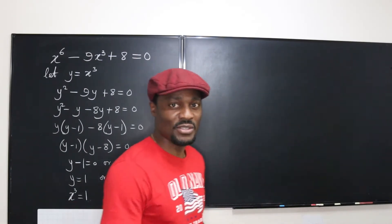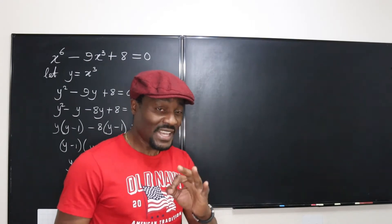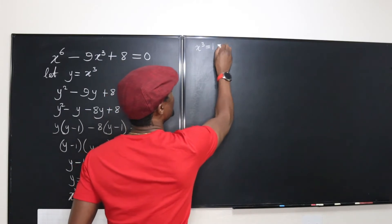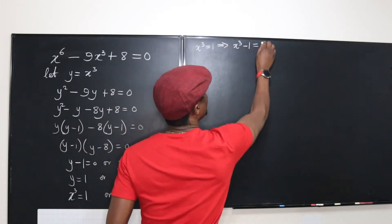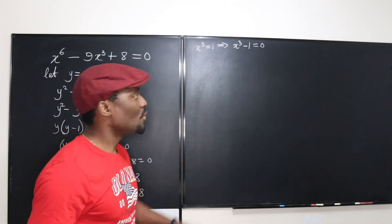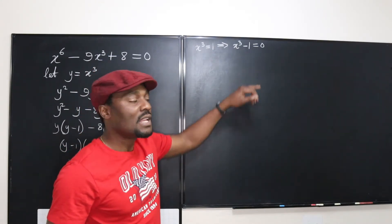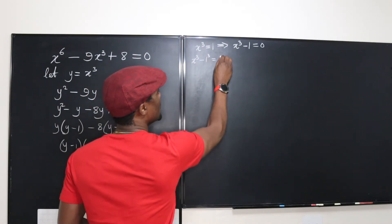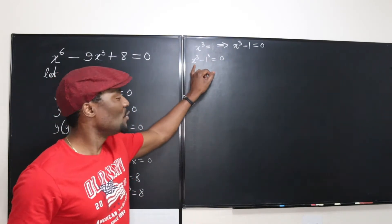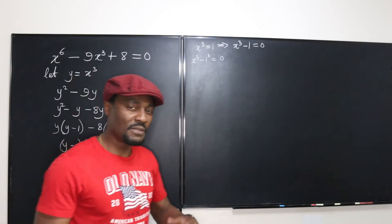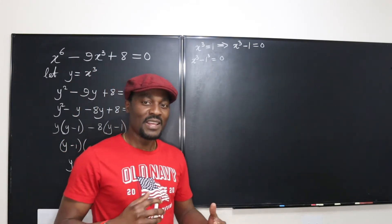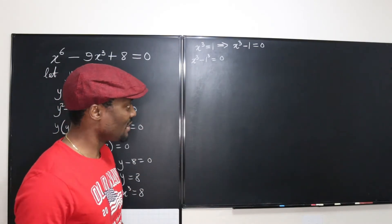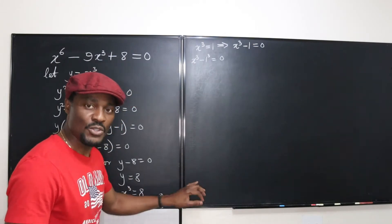You have to rewrite this expression because you know you have to get six answers. We're going to take x cubed equals 1 and say that x cubed minus 1 equals zero. We see this expression as the difference of two cubes, writing it as x cubed minus 1 cubed equals zero. Now we can do the expansion — just like you have difference of two squares, you also have difference of two cubes. What's the formula for difference of two cubes?